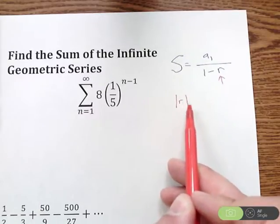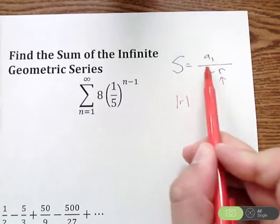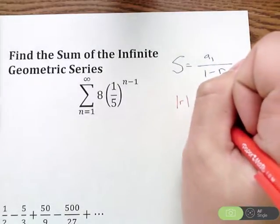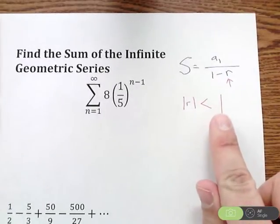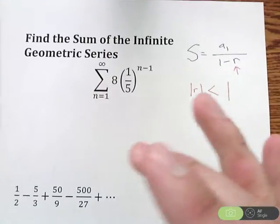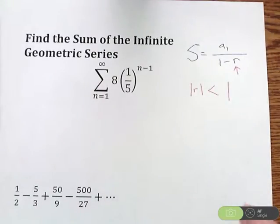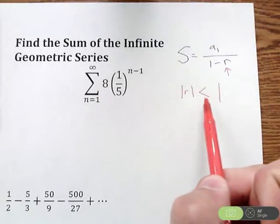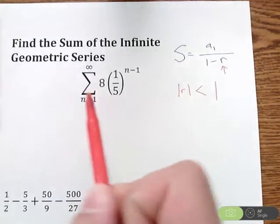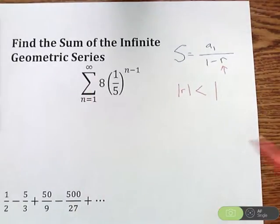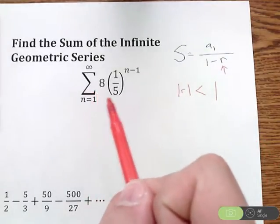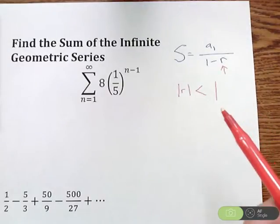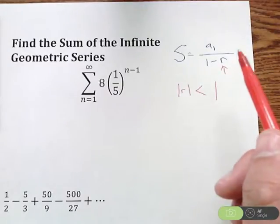Now when you take the absolute value of R, there's one thing we have to check to allow us to use this formula: the absolute value of R has to be less than one. The reason being, if it's less than one, our geometric series is going to approach a number. If R is bigger than one, this is going to keep getting bigger and bigger. It's not going to approach any number, so the sum does not exist.